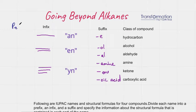So prefix goes first. And prefix will be, for example, meth for one carbon, eth for two carbons, prop for three carbons, and so on—the prefixes that you had to memorize before.